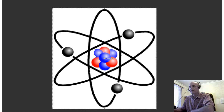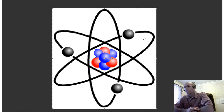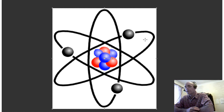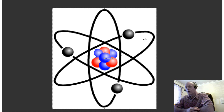Surrounding the nucleus, shown in black and in orbits, we've got in this case three electrons, shown in grey. Electrons are a negative charge, and electrons have the same amount of charge as the proton. So for every proton in an atom there is an orbiting electron. If you have three protons, which are positively charged, you have three orbiting electrons, which are negatively charged. Because the number of protons and electrons is the same, the net charge of the atom is neutral — the negative charge of the electrons precisely cancels out the positive charge of the protons.